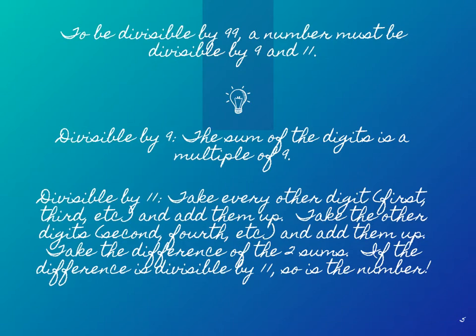To be divisible by 11, you need to take every other digit, like the first, the third, etc., and add those up. Then take the other digits that you didn't use the first time, the second, the fourth, etc., and add those up. Take the difference of those two sums. If you get a difference that's divisible by 11, then that number is divisible by 11.